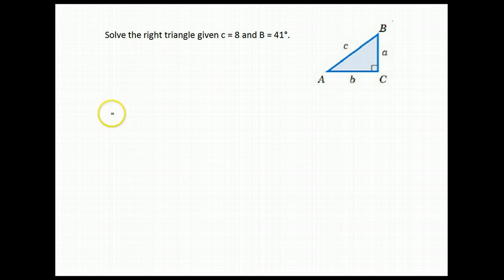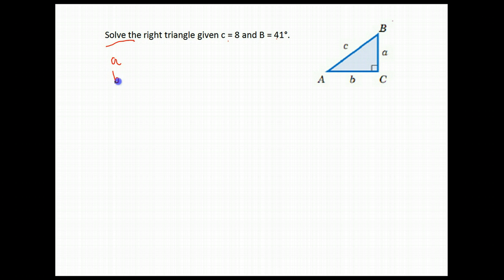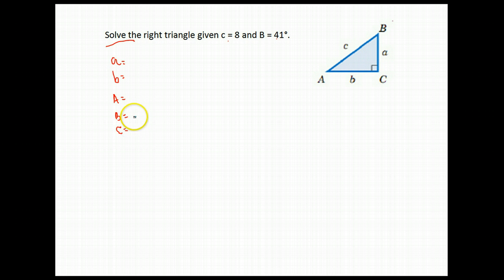Now, what happens if you're given instead a side and an angle? We're still asked to solve the triangle, which means to find all of those missing parts. In this case, we are missing the length of side A, the length of side B, and the measures of angles A and C. We already know the measure of angle B — they told us it was 41 degrees.